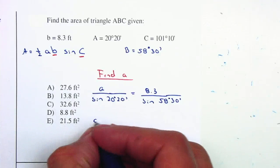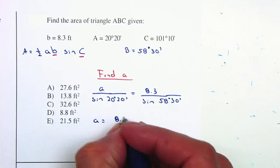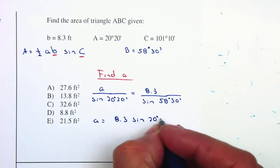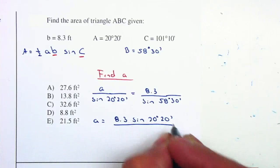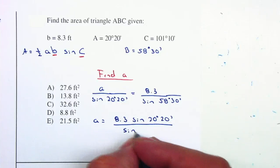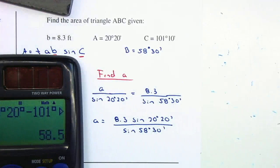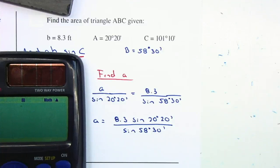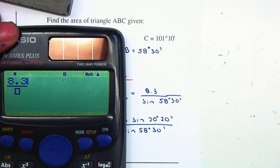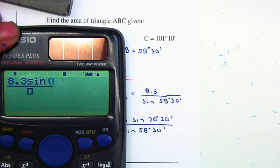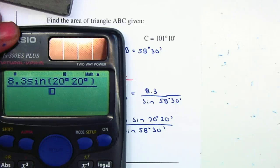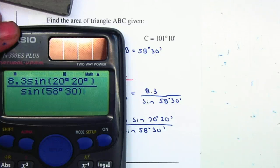I'm going to solve for A. So A equals 8.3 times sine of 20 degrees 20 minutes divided by sine of 58 degrees 30 minutes. I'm just going to type it into the calculator. 8.3 multiply by sine of 20 degrees 20 minutes divided by sine of 58 degrees 30 minutes, or 58.5.